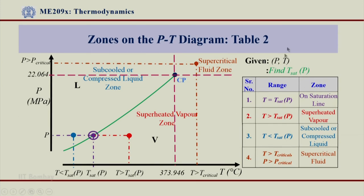Thus, by using table 2 now and by comparing temperature T_sat(P) with given temperature, we can identify that given state lies in which zone of all these four zones.